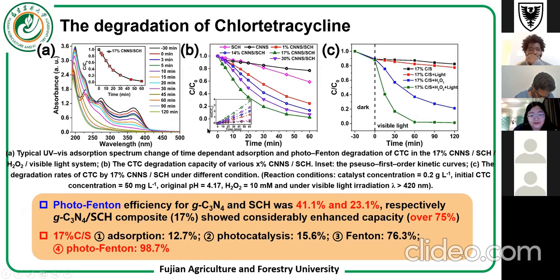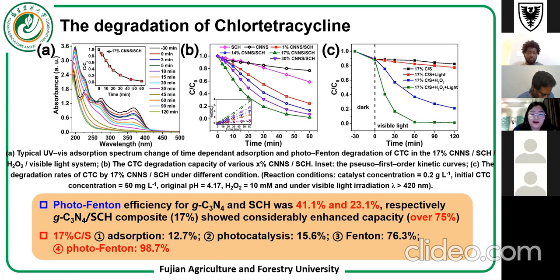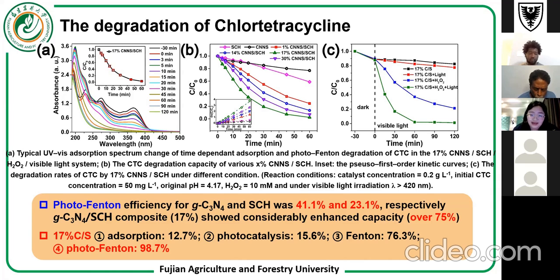Our materials were applied to heterogeneous photo-Fenton reactions for the degradation of chlortetracycline (CTC). The single Schwertmannite or carbon nitride alone can degrade CTC only around 40% and 20% respectively in one hour. However, our composite material showed greatly enhanced degradation performance, achieving catalytic activity of 97.7%, which is about seven times that of Schwertmannite and 15 times that of carbon nitride. We further studied the contribution of different processes, and both the photo and Fenton systems are necessary.